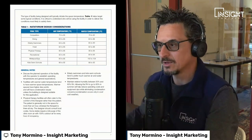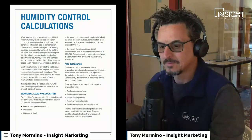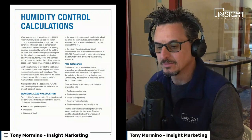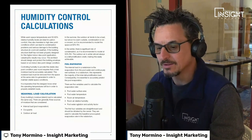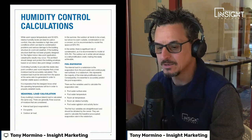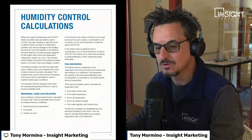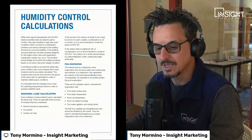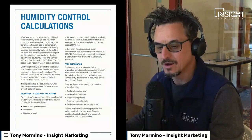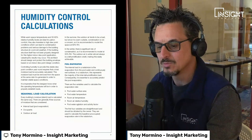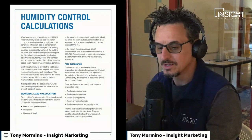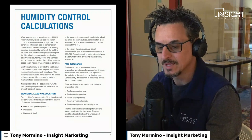Moving on to humidity control calculations. While warm space temperatures and 50–60% relative humidity levels are ideal for patron comfort, they also translate to high dew point conditions, which can lead to condensation problems and serious damage to the building structure in cold weather. If the building structure has not been properly designed for this higher indoor dew point application, catastrophic results may occur. Controlling humidity to provide a stable dew point condition year-round requires that a total moisture load be accurately calculated — this moisture load must be removed from the space at the same rate it is generated.